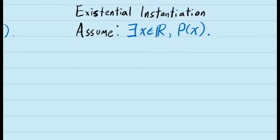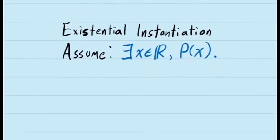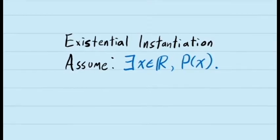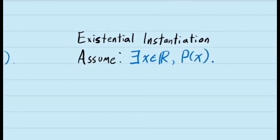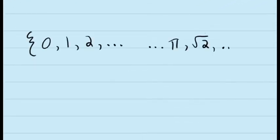Suppose in our proof we've assumed a statement that begins with an existential quantifier. In other words, we've assumed a statement along the lines of: there is at least one value of x in the real numbers for which some statement about x is true. The question is, how can we use this statement in our proof? How can we extract information from it? All this statement is telling us is that somewhere in the vast list of real numbers out there, there is at least one that has this property, p of x. But the statement doesn't tell us which one.